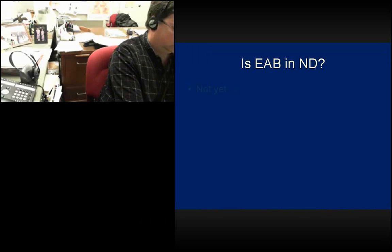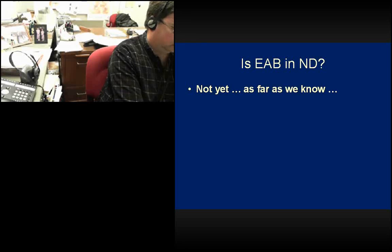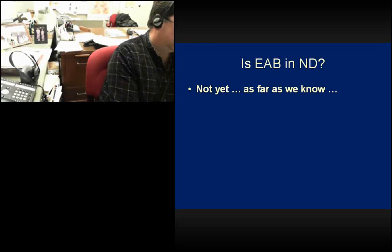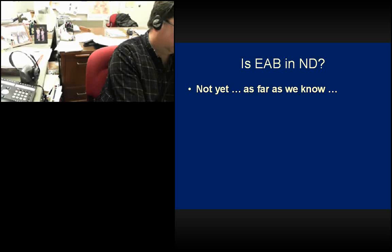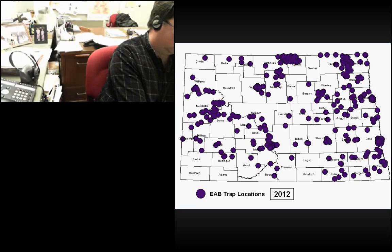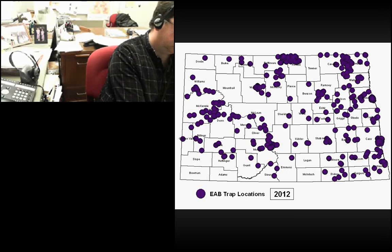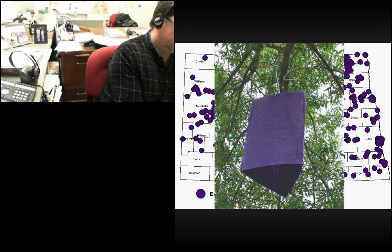Is EAB in North Dakota? I say 'not yet' — not yet as far as we know. It could be here and we don't know it. EAB has typically been in a location for three to five years before it's been found. How do we know? Besides all the eyeballs out there looking, there's a federally funded trapping program by USDA APHIS with nearly 500 traps throughout the state. Here's the map of trap locations from 2012 — 2013 was similar. These are purple sticky traps; the lure and color have been improved over the years.